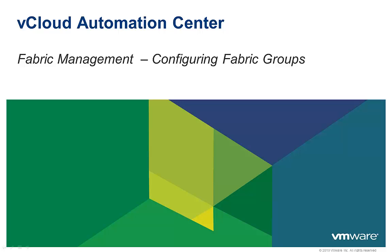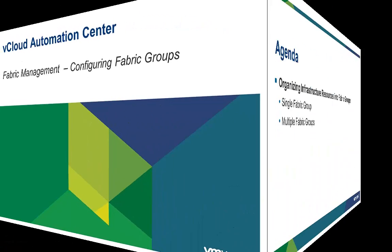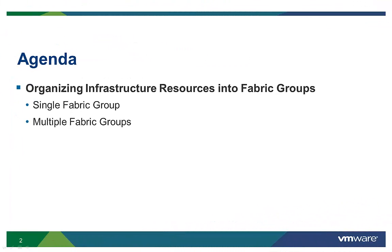Welcome to the vCloud Automation Center video on Fabric Management: Configuring Fabric Groups. As part of the vCloud Automation Center Fabric Configuration process, we are going to explore how infrastructure resources will be organized into fabric groups so that they can be allocated to vCloud Automation Center consumers for use in deploying infrastructure and application services.